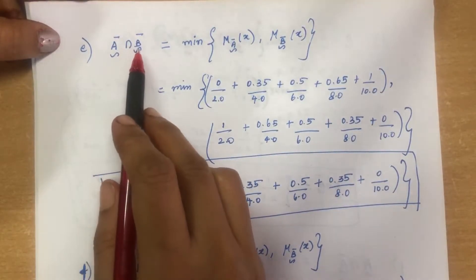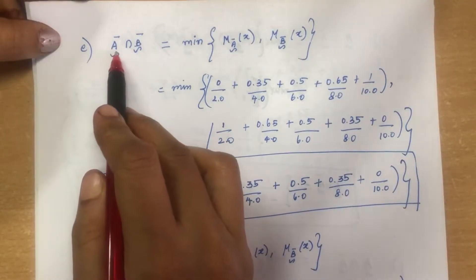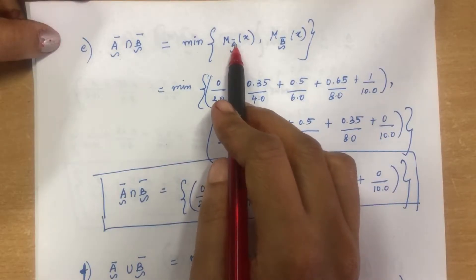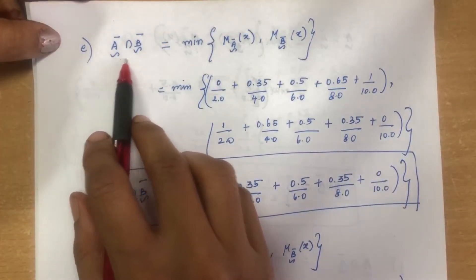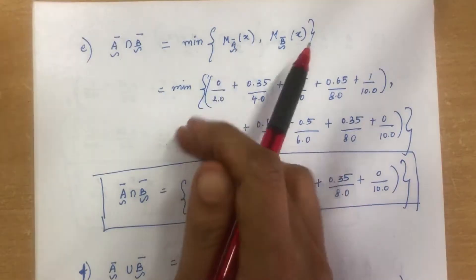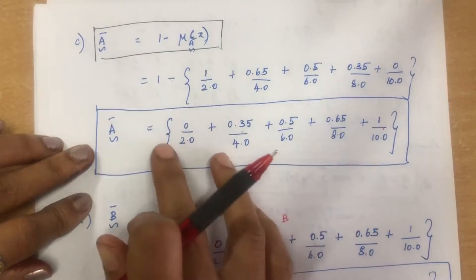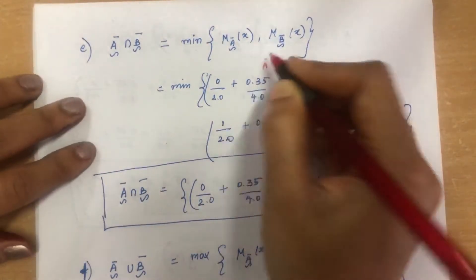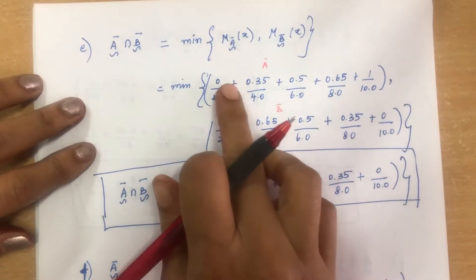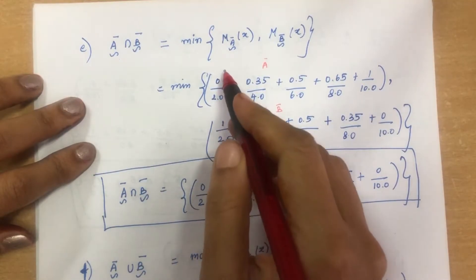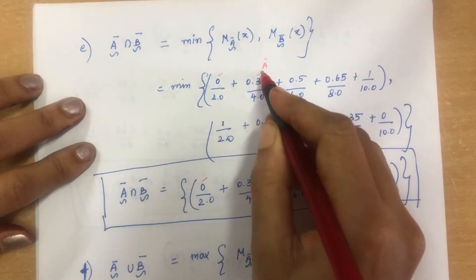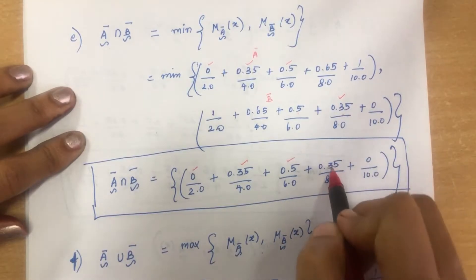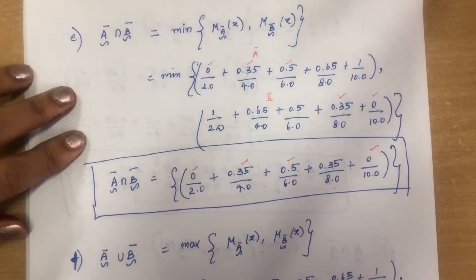For A complement intersection B complement, intersection means minimum. Using the previously found complements: min(0, 1) = 0 for 2.0; min(0.35, 0.65) = 0.35 for 4.0; min(0.5, 0.5) = 0.5 for 6.0; min(0.65, 0.35) = 0.35 for 8.0; min(1, 0) = 0 for 10.0. Result: 0/2.0 + 0.35/4.0 + 0.5/6.0 + 0.35/8.0 + 0/10.0.